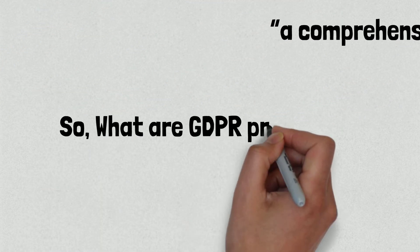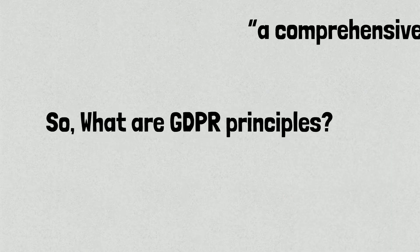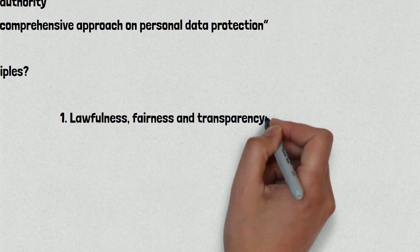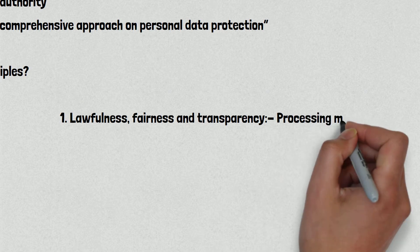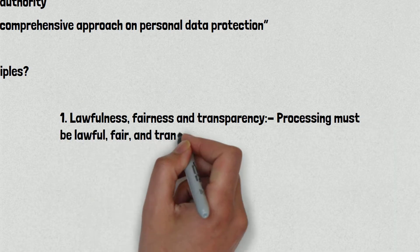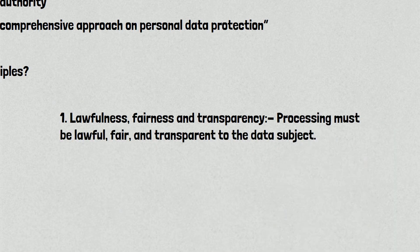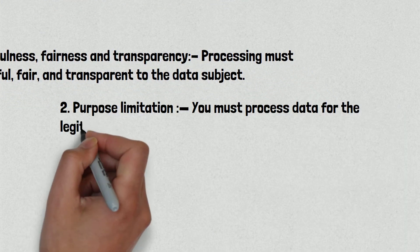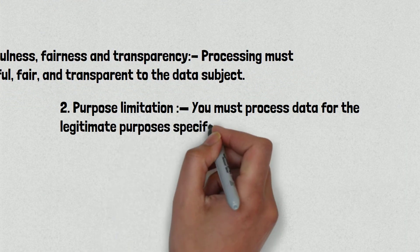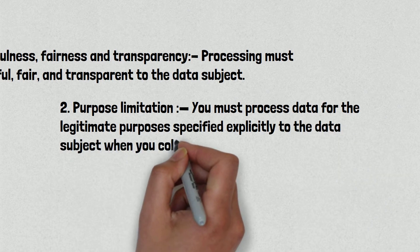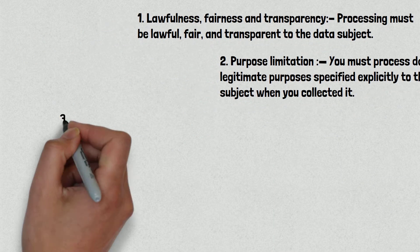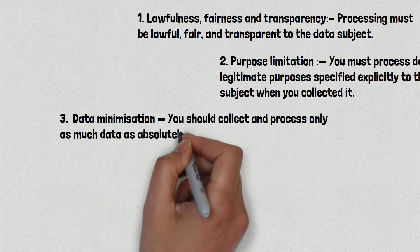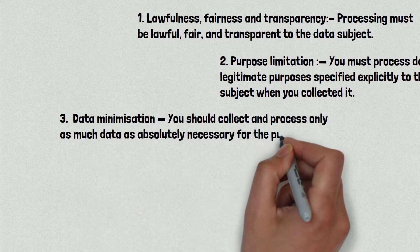So, what are GDPR principles? Number one is lawfulness, fairness, and transparency — processing must be lawful, fair, and transparent to the data subject. Number two is purpose limitation — you must process data for the legitimate purposes specified explicitly to the data subject when you collected it. Number three is data minimization — you should collect and process only as much data as absolutely necessary for the purposes specified.